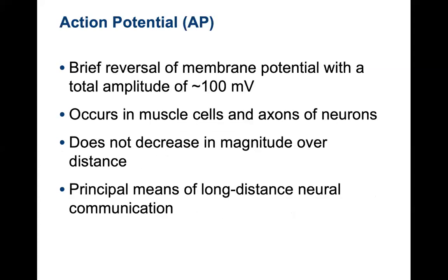The difference between action potentials and graded potentials is that an action potential is a brief reversal of membrane potential with a total amplitude of 100 millivolts. This occurs in muscle cells but also in the axons of neurons. It does not decrease in magnitude over distance, and it is the principal means of long-distance neural communication.